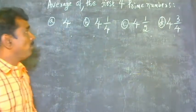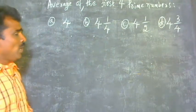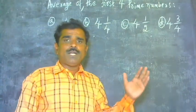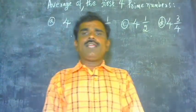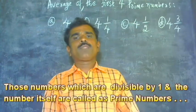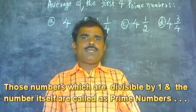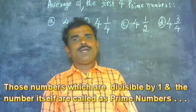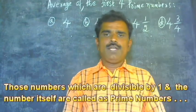So, this is the problem. Before going to solve this particular problem, let us recall the definition of prime numbers. Those numbers which are divisible by 1 and the number itself are called prime numbers.